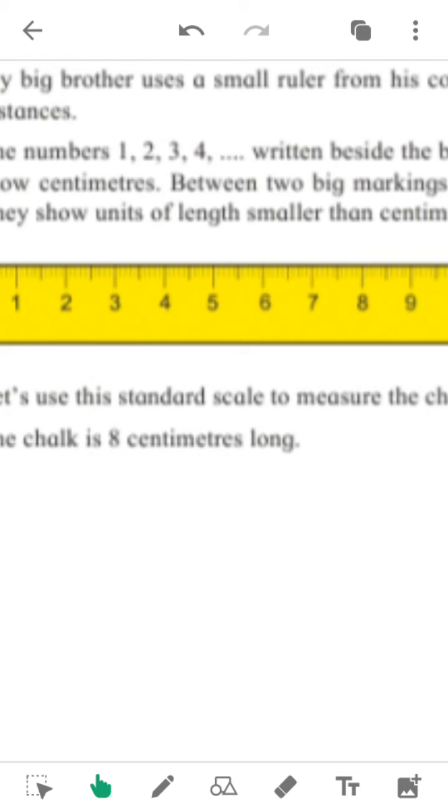The numbers 1, 2, 3, 4, 5 written besides the bigger marking on this ruler show centimeter. Between two big markings, there are smaller markings. They show unit of length smaller than centimeters.